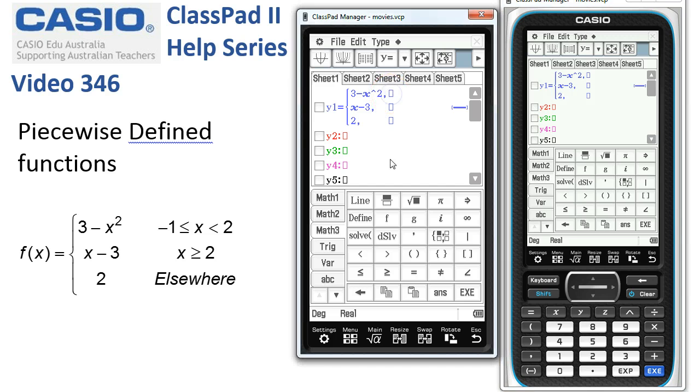Now the restrictions on the top one is that negative 1 is less than or equal to x is less than 2.